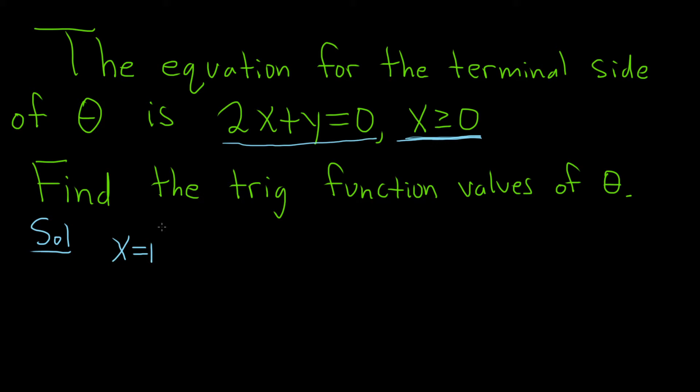Don't use 0, which is not positive, so that won't work. Take x equals 1, and if you plug that in, you get 2 times 1 plus y equals 0. So y is equal to negative 2. Our ordered pair would be 1, negative 2.